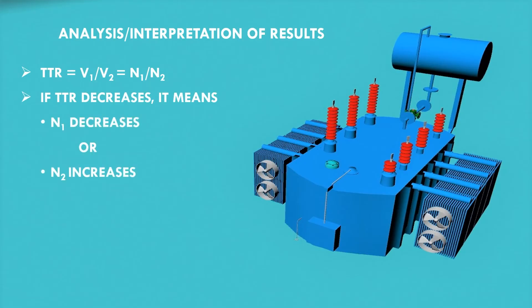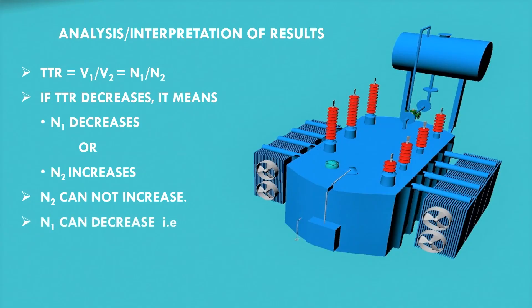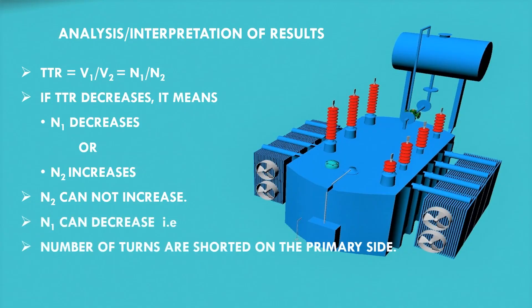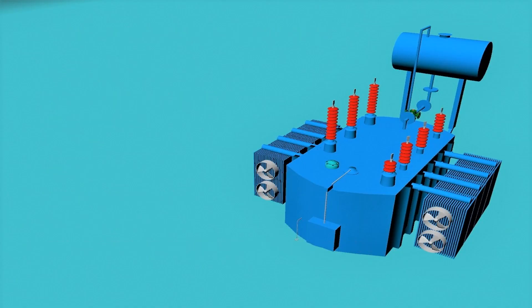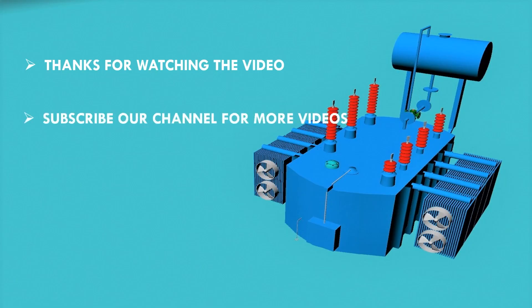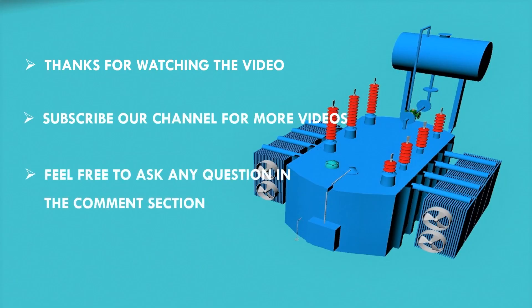On the other hand, if TTR decreases, it means either N1 decreases or N2 increases. N2 cannot increase by itself, however N1 can decrease — meaning turns are shorted on the primary side. So if TTR decreases, it means there is insulation failure between turns on the primary side of the transformer. Thanks for watching — subscribe to the channel for more videos and feel free to ask questions in the comments.